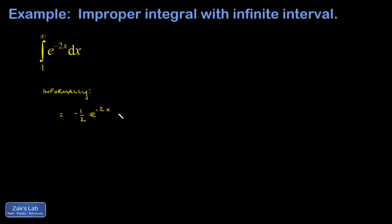Then I evaluate from 1 to infinity, and when I evaluate that upper limit I get e to the negative twice infinity, which is just negative infinity.